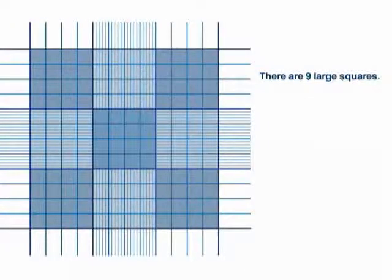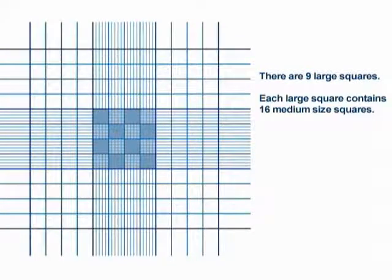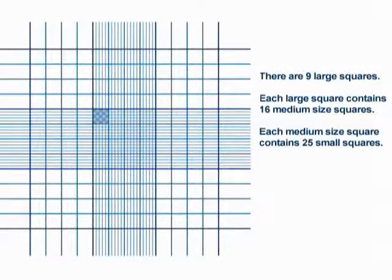This field is subdivided into nine so-called large squares, each of which contains sixteen medium-sized squares, which are again divided into twenty-five small squares.